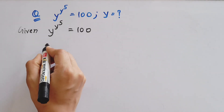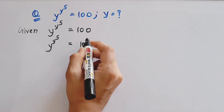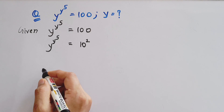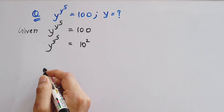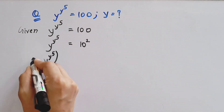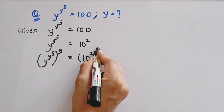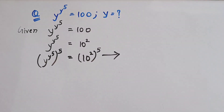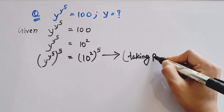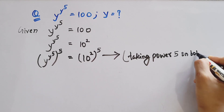So first we'll take y to the power y to the power 5. We can write 100 as 10 squared. Now we'll take power 5 on both sides. So y to the power y to the power 5, whole to the power 5, equals to 10 squared whole to the power 5.